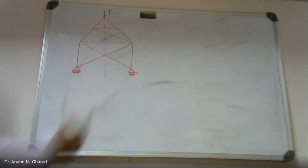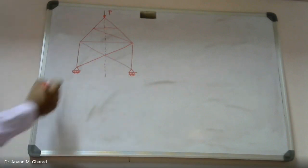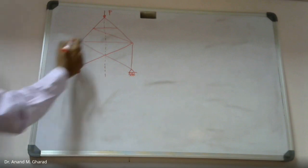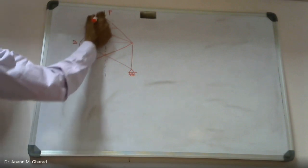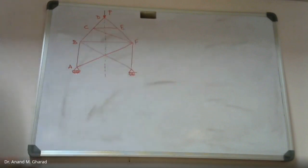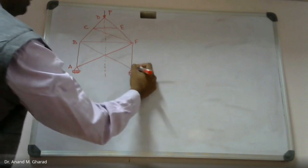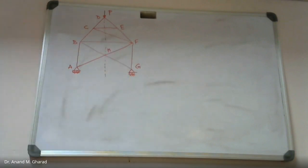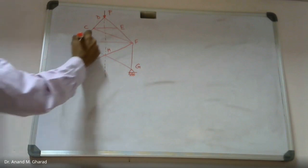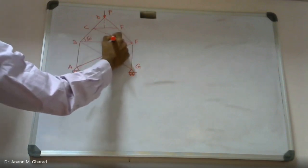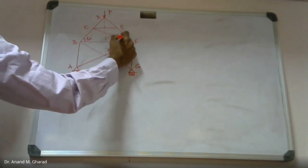These are the members of the structure. I hope you must have observed transmission towers — typical transmission towers resemble this kind of model. The supports are given as one hinged and one roller. The notations are A, B, C, D, E, F, G, and H. The angle information: this is 60 degrees, this is 30, and this is 30 degrees.